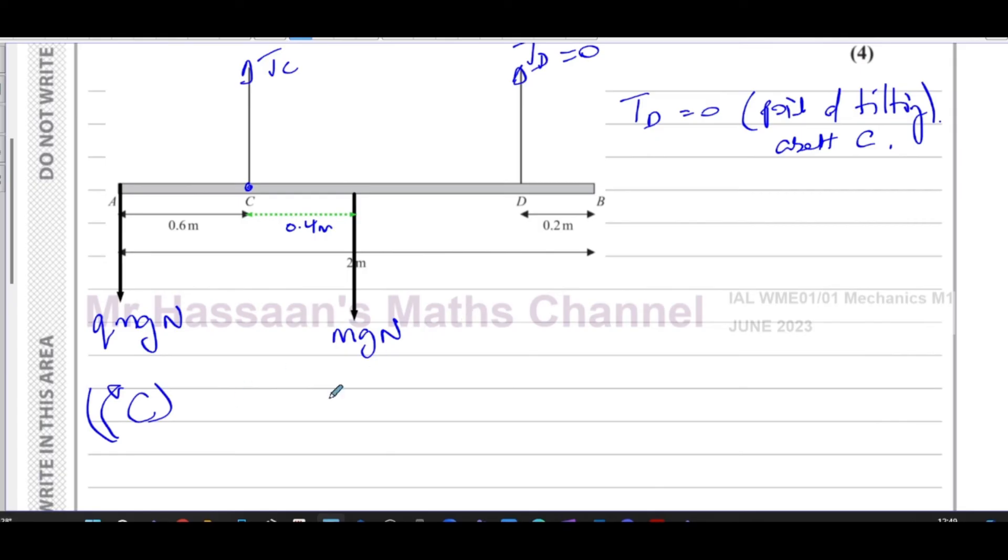We can say the clockwise moments are the force, which is mg times 0.4, and they must equal the anticlockwise moments, which are basically Qmg times 0.6.